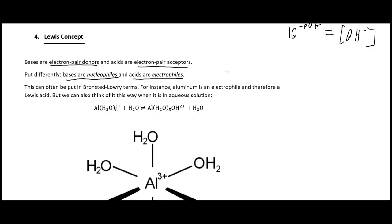In the Lewis concept, bases are electron pair donors and acids are electron pair acceptors. In organic chemistry terms, bases are nucleophiles and acids are electrophiles. A nucleophile wants to donate electrons toward nuclei — in Bronsted-Lowry terms that nucleus is the H plus. An electrophile accepts electrons. For example, NH3 has a lone pair (nucleophile, Lewis base) and H plus is the electrophile (Lewis acid) — they bond together.